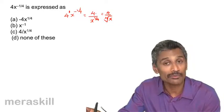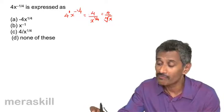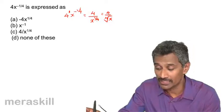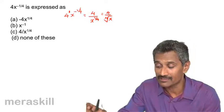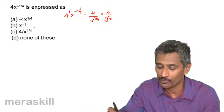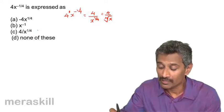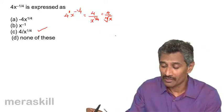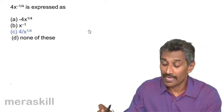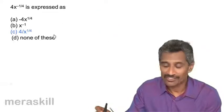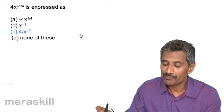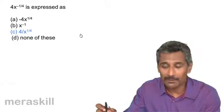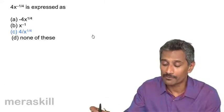So 4 is going to remain as it is, and x raised to minus 1 by 4 would go to the denominator and become x raised to 1 by 4. So among the options, this is the right answer — a simple application of how we can combine a couple of rules.